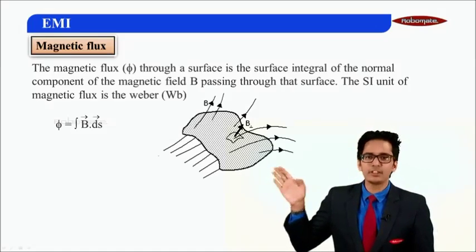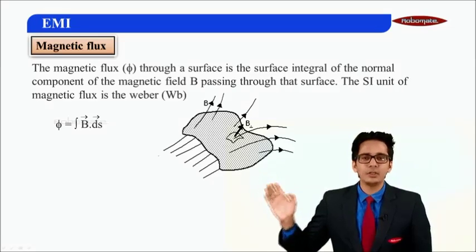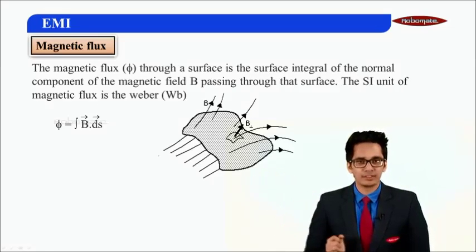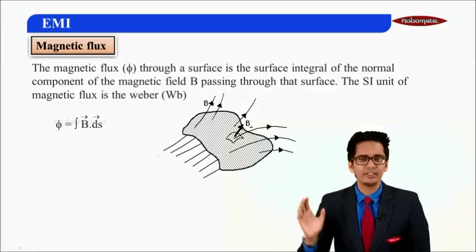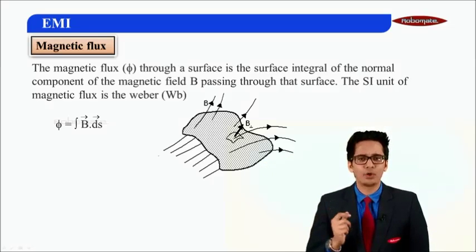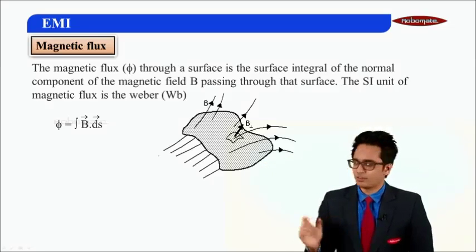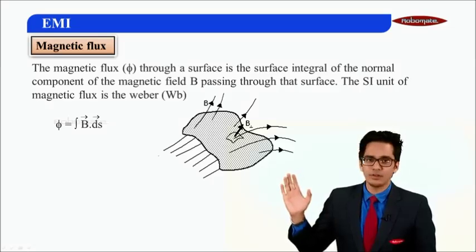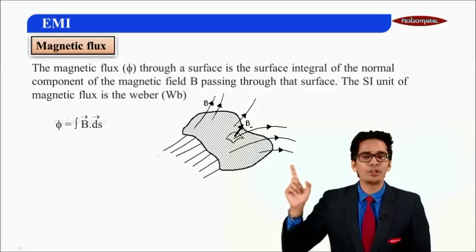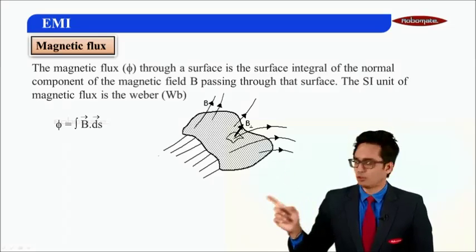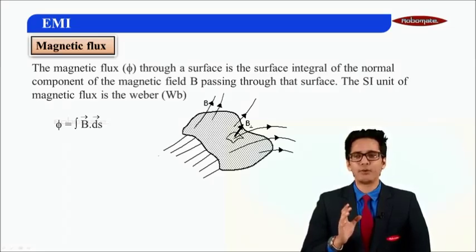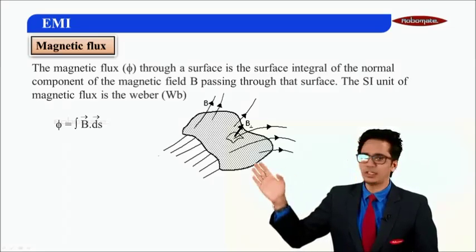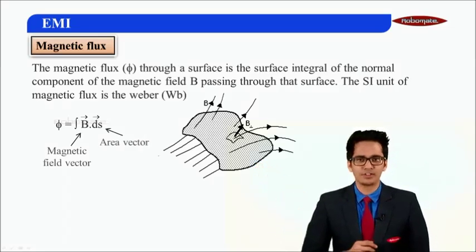The mathematical formula is: flux = ∫B·ds. Like in the electric field we had seen flux was ∫E·ds, here it is ∫B·ds. If this is a surface, the normal component — the B dot product — takes care of that, so the mathematical formula is ∫B·ds.